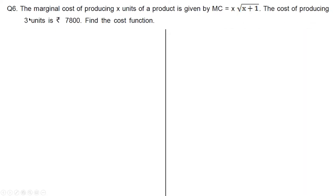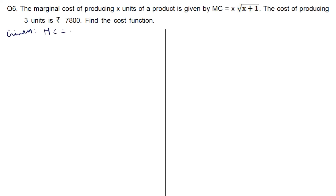The last question: the marginal cost of producing x units of a product is given by marginal cost equals x times root of (x plus 1). The cost of producing 3 units is rupees 7800. Find the total cost function. Here the marginal cost is given, and the cost of producing 3 units is rupees 7800; we need to find the cost function.